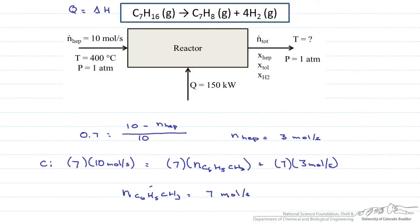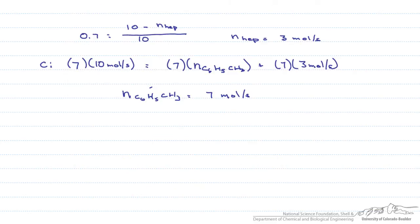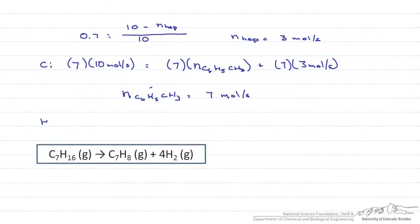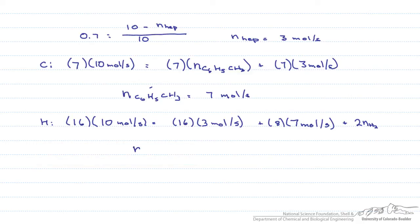Finally, we have to solve for the hydrogen coming out. We do a hydrogen balance. Coming in we have 16 hydrogen atoms per mole of heptane and there are 10 moles per second of heptane. This equals the 16 hydrogen atoms of the heptane that comes out plus the 8 hydrogen atoms in the toluene plus 2 hydrogen atoms per mole of hydrogen gas. We solve for the hydrogen gas and get 28 moles per second.